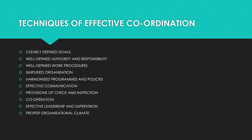Eighth point: cooperation — coordination must be accompanied by cooperation; individuals in the organization should be willing to help each other voluntarily. Ninth point: effective leadership and supervision — coordination can be achieved through effective leadership and supervision at both planning and implementing stages. Last point: proper organizational climate — it refers to the work environment that prevails in the organization. A proper organizational climate can be developed by effective leadership, high standards of excellence, encouragement of participation, group decision making, and tolerance of individual differences.